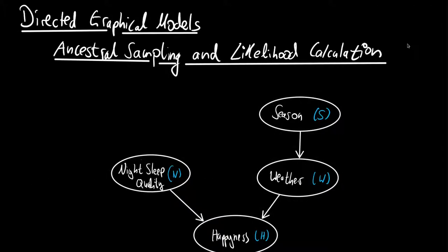For this we want to look at the example of the directed graphical model given here, where we have four random variables or four nodes. This directed graphical model, or the joint distribution, is concerned with happiness. We have two root nodes for the night sleep quality and the season. The season causes weather, so the weather is dependent on the season, and happiness is dependent on the night sleep quality and the weather.